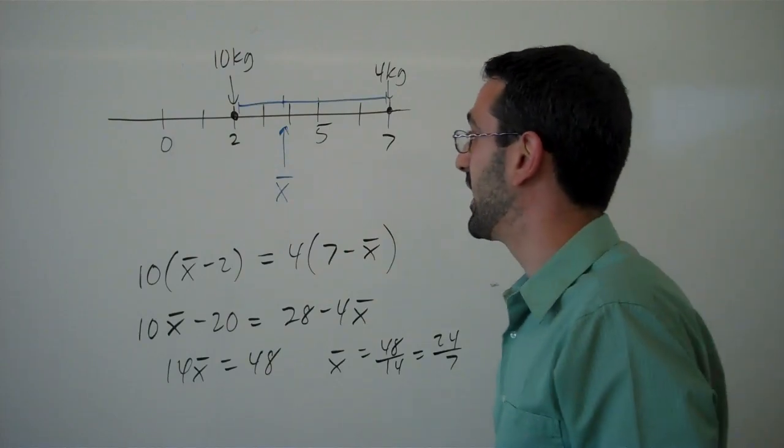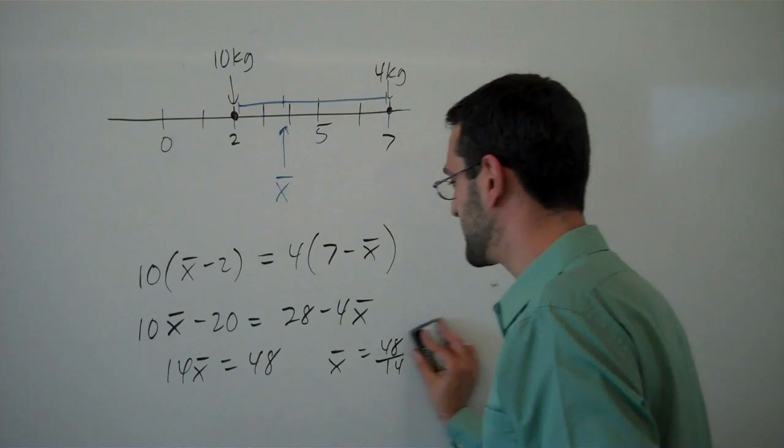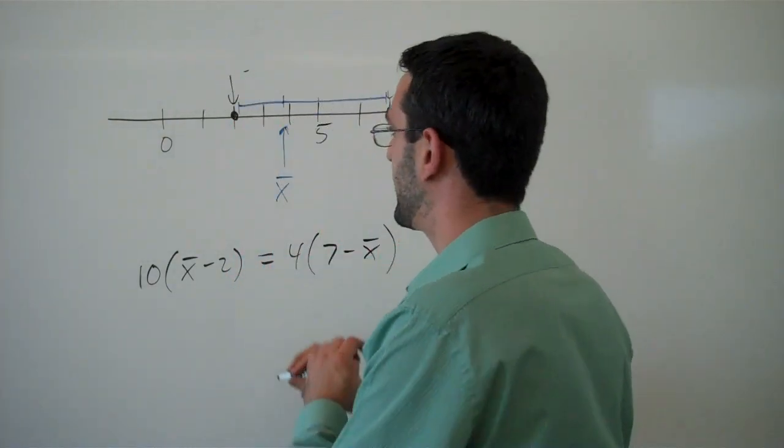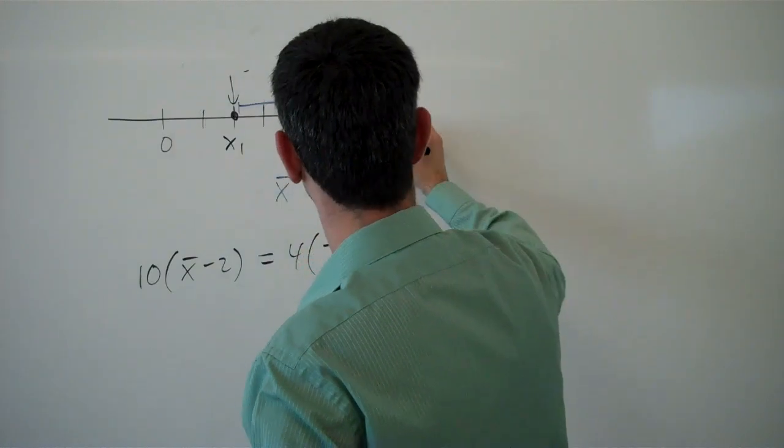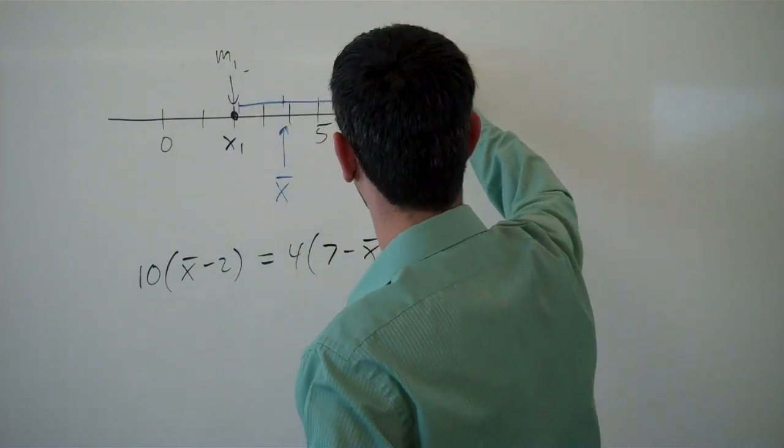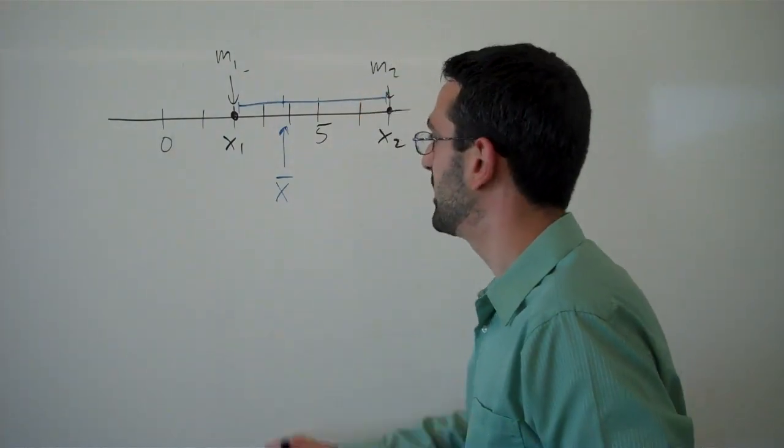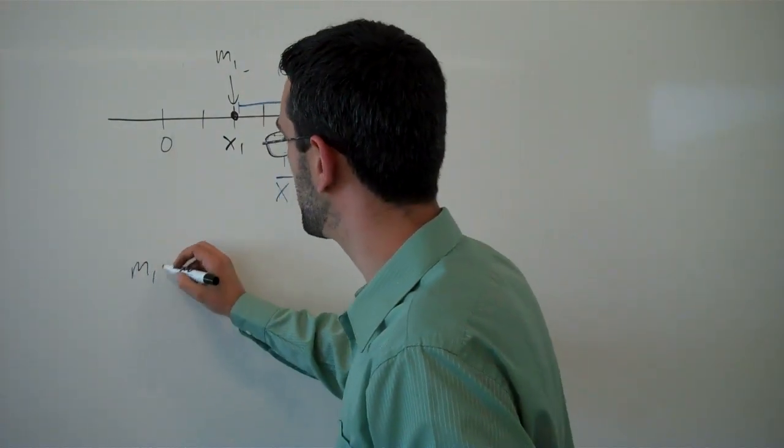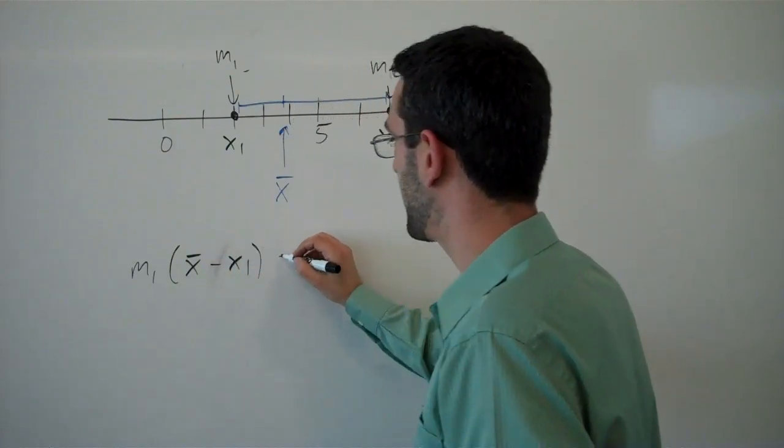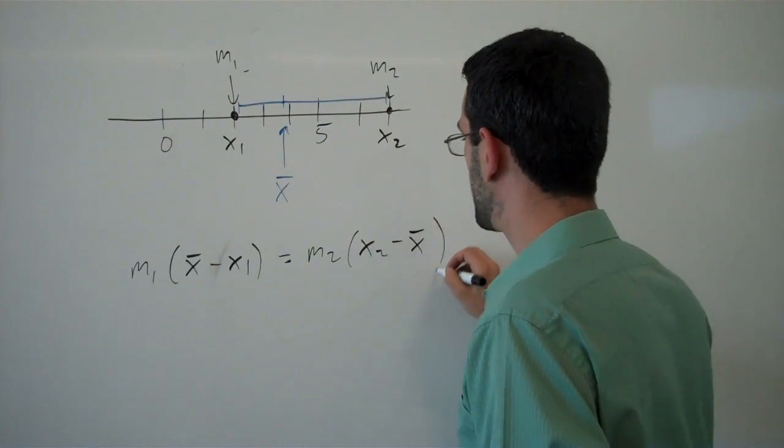So, that's the general idea, and now let's go a little bit more general. Suppose that these were at any old x₁, x₂ points, and the masses were m₁ and m₂. Then, we get m₁ times (x̄ minus x₁) would need to equal m₂ times (x₂ minus x̄).